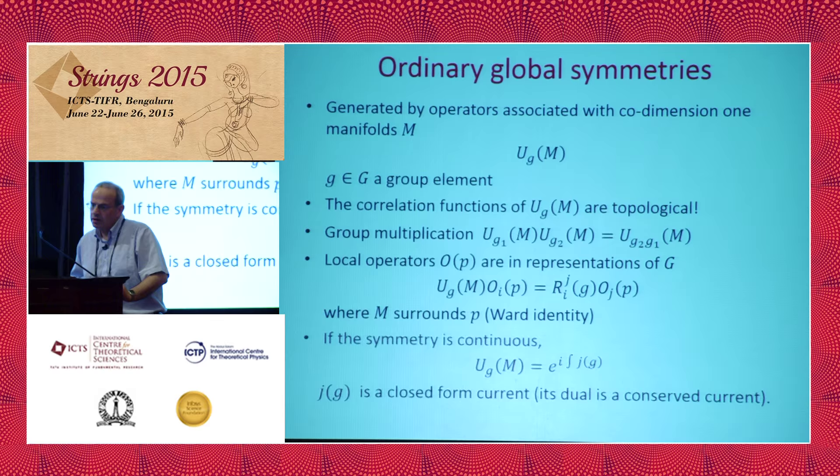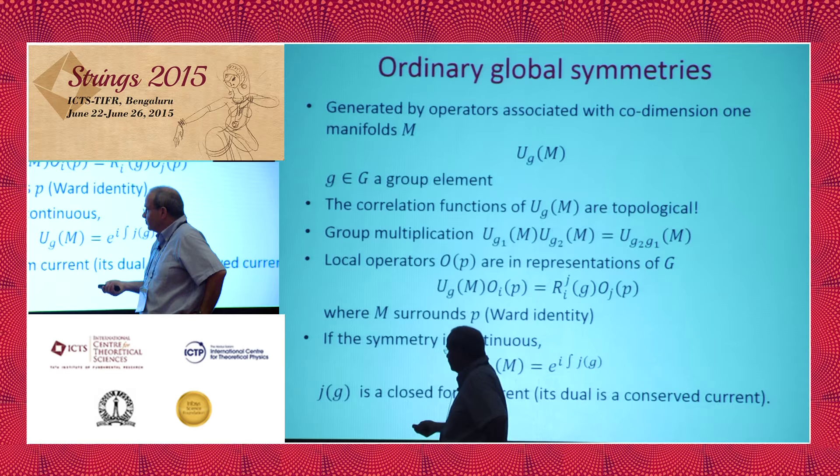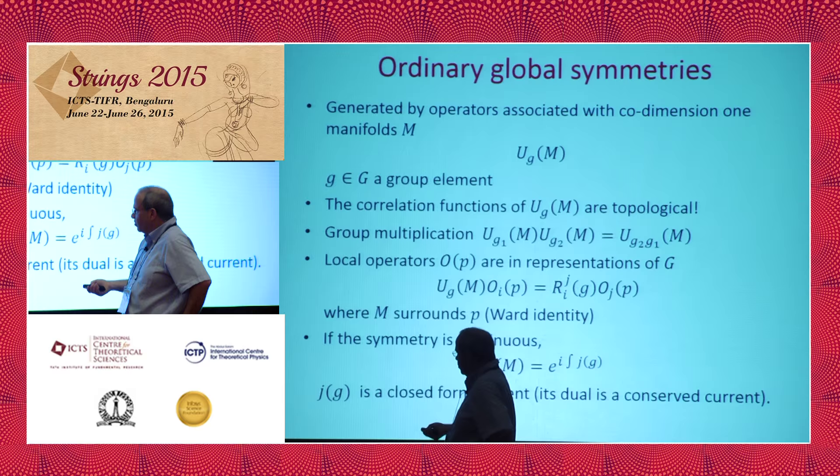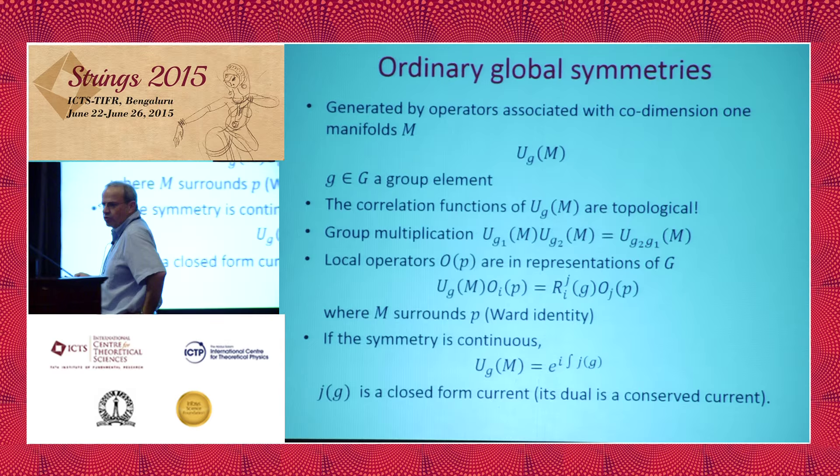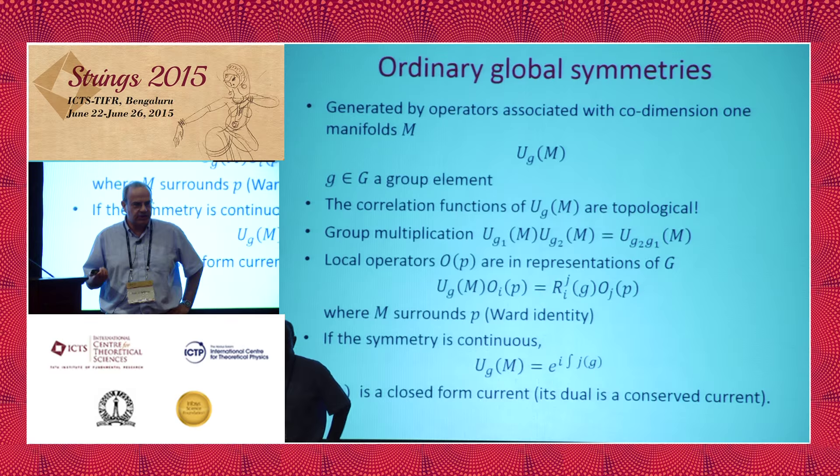We can also take the operator U with a manifold M and surround the local operator at the point P. This is often done in two dimensions where we integrate a current around the local operator, but this easily generalizes to higher dimensions. If we have an operator at point P and U surrounds it, it acts as a representation of the symmetry on the operator. This is what we use when we want to derive Ward identities.